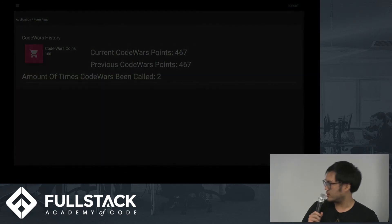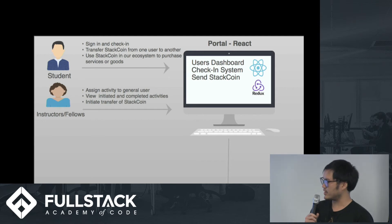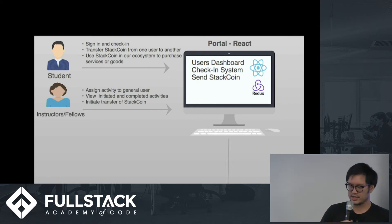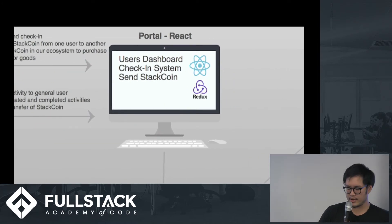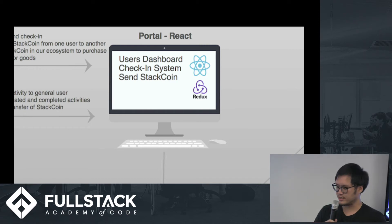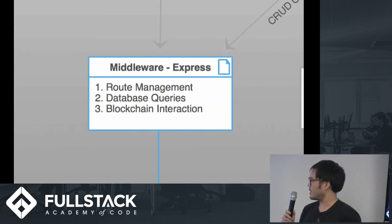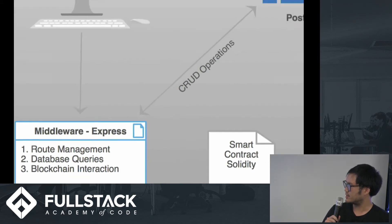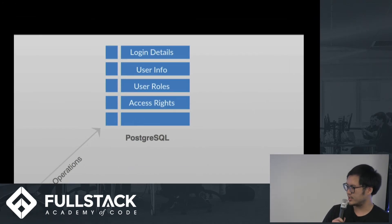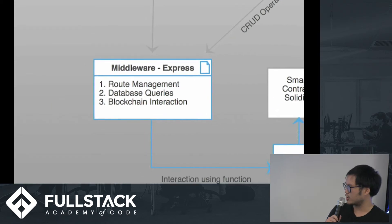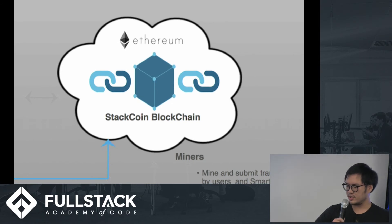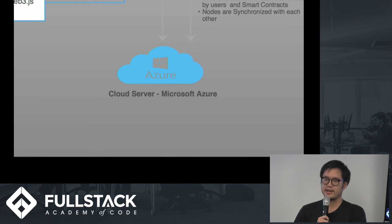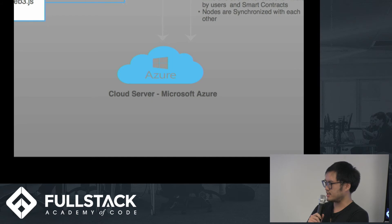Thanks, Atish. I'll give a brief overview of our tech stack. Students can log in, check in, send money to each other, and view wallet information through the dashboard page. Our frontend is built on React, Redux, and Web3. Web3 and Redux both serve as places to pull information from, which React uses to render pages on the client side. Our middleware uses Express, which manages site navigation and makes queries to our PostgreSQL database, which holds user information and allows account management so students can log in. It also makes calls to our blockchain through Web3, and the blockchain is hosted on six Azure servers remotely.